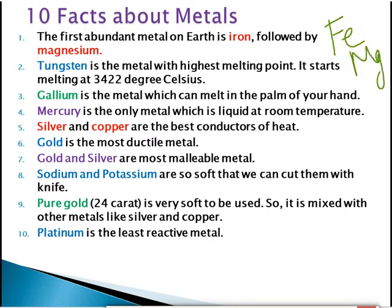Next, tungsten — symbol W — is the metal with the highest melting point, which is 3422 degrees Celsius. You have seen bulbs; the wire-like filament inside a bulb is made of tungsten because it has the highest melting point.